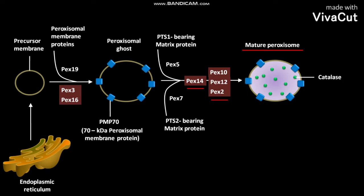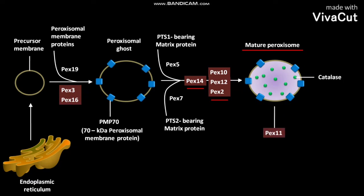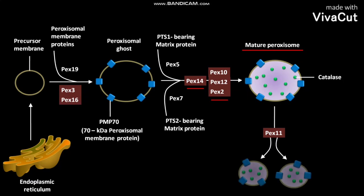The mature peroxisome then undergoes division with the help of PEX-11 protein to produce 2 new peroxisomes.